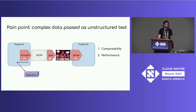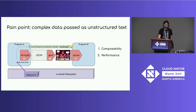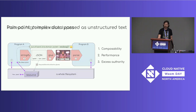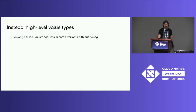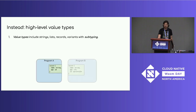And if program A has a file descriptor pointing to a resource and wants to pass it to program B, it could use a Unix domain socket sendmsg, but that's a pain. So mostly what we do is stick the resource in a whole file system, give it a file name, have both programs import the whole file system, and pass the file by its filename in the JSON. This is an example of a pattern Dan Goeman calls "ghosts," and more generally it's an example of excess authority. Instead, we're proposing high-level value types: strings, lists, records, variants, with subtyping so interfaces can evolve over time.